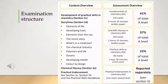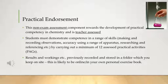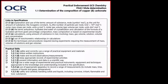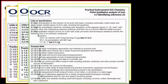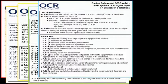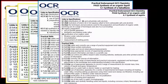The practical skills paper, worth 22% of the total A-level, assesses practical skills covered throughout the course. The practical component of the course is known as the practical endorsement. This is non-exam assessed, so it does not count towards your final A-level grade. There are certain skills however which are teacher assessed — we're looking for students to demonstrate competence in a range of different skills, for example making and recording observations, accurately using a range of apparatus, and researching and referencing correctly. Students will carry out a minimum of 12 assessed practicals across the two years.